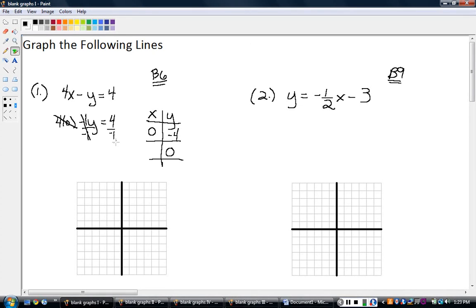And then we do the whole thing again for X. So for X, I put a zero in for the Y. Four X minus zero equals four. That goes away. I get four X equals four, so I divide by four. And X equals four divided by four is one. Did that pretty quickly, because we've done it before. Hopefully you remember.